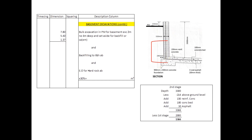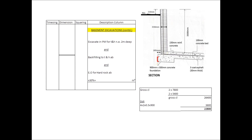We are moving on to the excavation for our concrete footing. To get that we need to determine the center line. We take 7800 and 5400, multiply these by 2, giving a gross center line of 26,400. We then deduct 4 times 2 times 0.5 times 900 millimeters, which gives us 3600. Subtracting from 26,400 gives us 22,800. So we have 22.80 by 0.9 by 0.2 for the footing excavation dimensions.